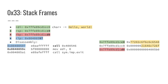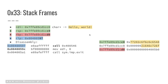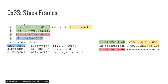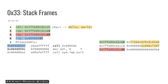This animation should make it super clear. I've trimmed down the output so you can see just the important parts, with a handful of registers at the top, a disassembly of the assembly instructions of the hello program on the left, and a picture of the stack on the right.